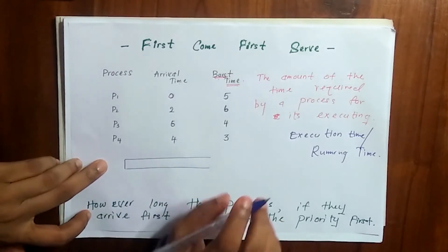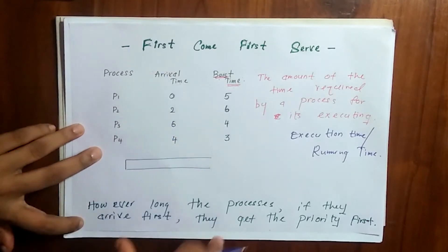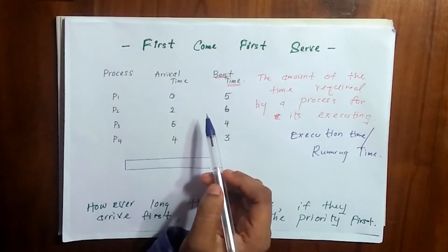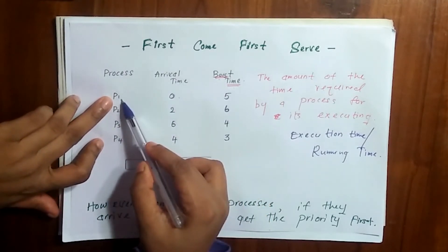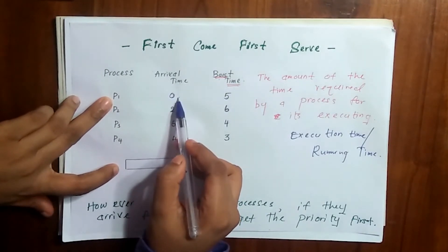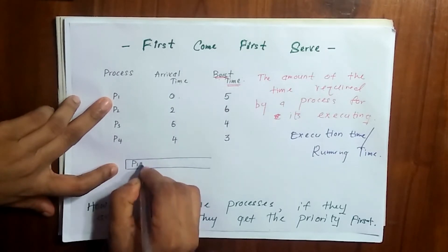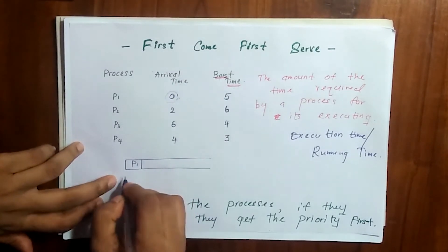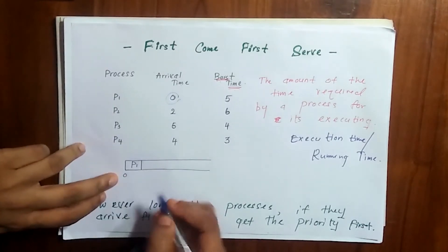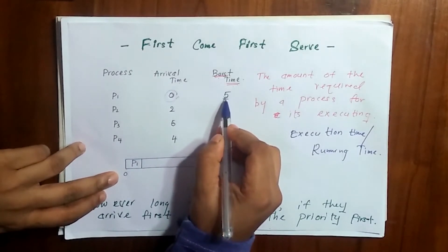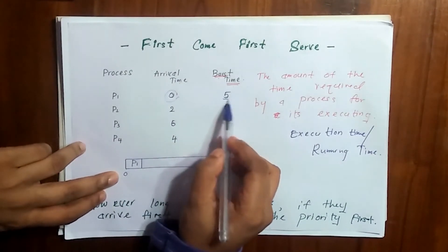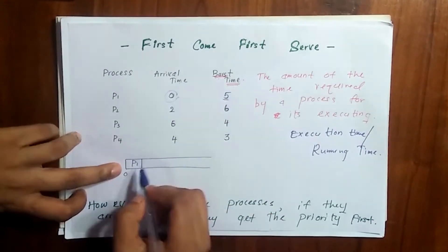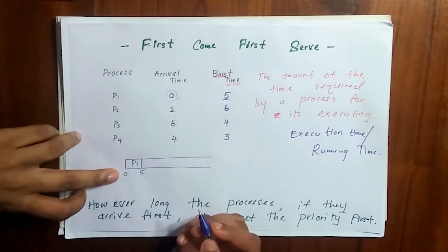We draw the Gantt chart and place the processes according to the basic FCFS principle. From P1, P2, P3, and P4, P1 is the process which arrives first because its arrival time is 0. So we place P1 here — it starts at 0 and its burst time is 5, so we write 5 here. P1 takes 5 milliseconds.